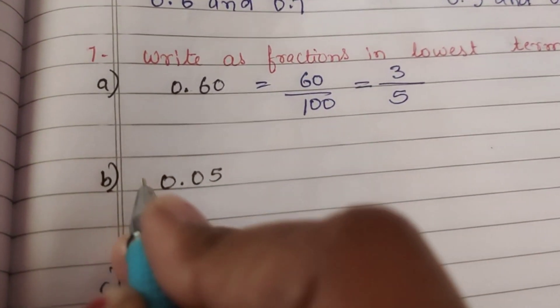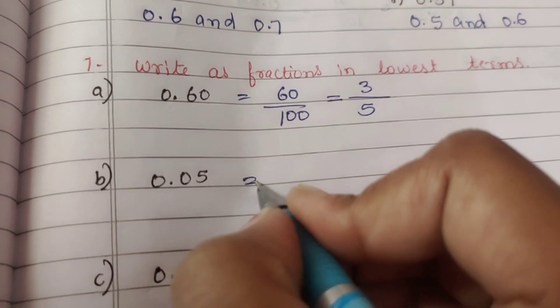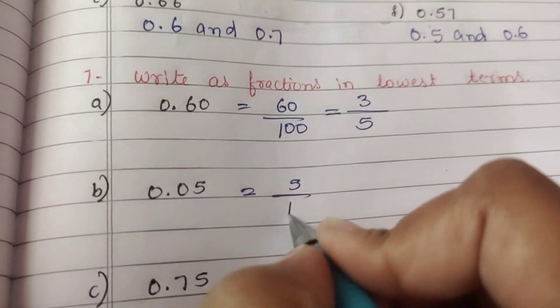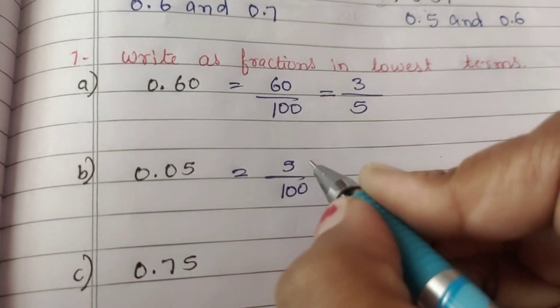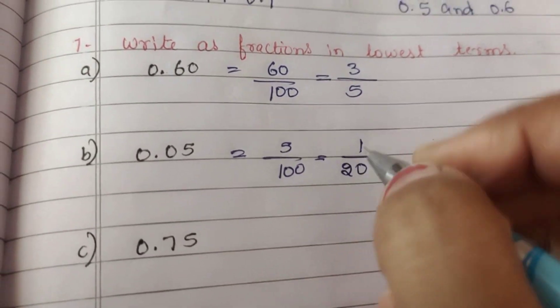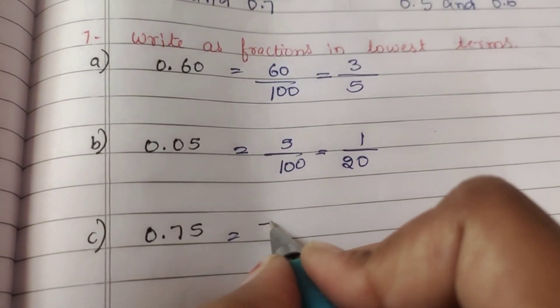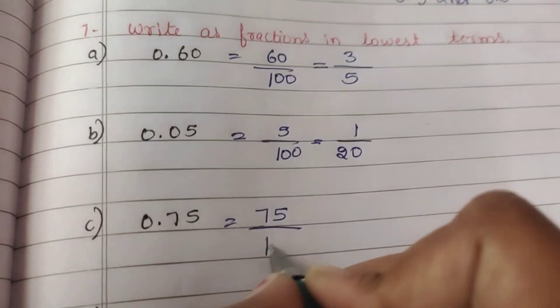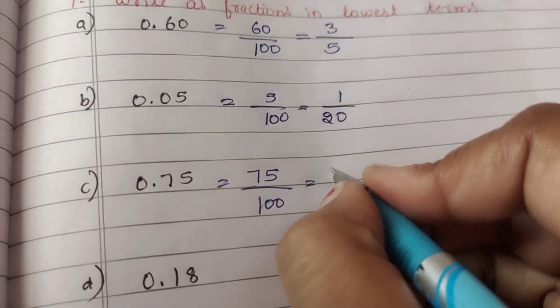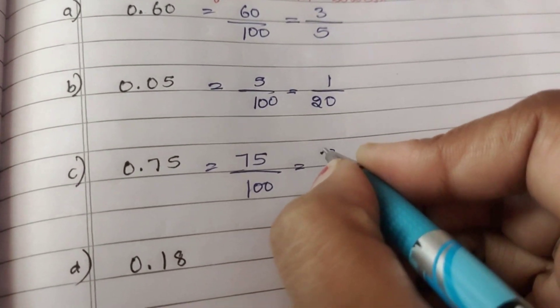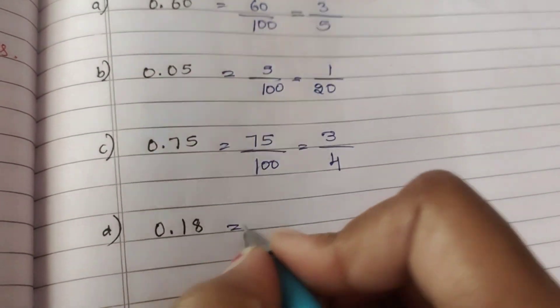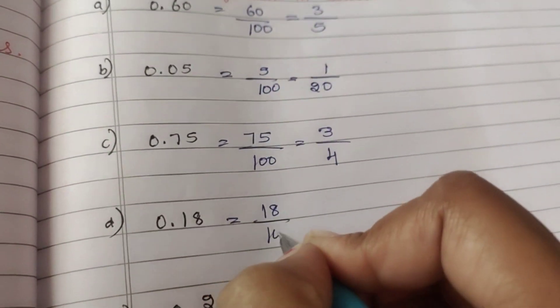Second question: write as fractions in lowest form. 0.05 has 2 digits, so 5 by 100. Lowest form: 5 ones are 5, 5 twos are 10, giving 1 by 20. Next one: 0.75 equals 75 by 100. Dividing by 25: 25 threes are 75, 25 fours are 100, giving 3 by 4. 0.18 equals 18 by 100. Divide by 2: 2 nines are 18, 2 fifties are 100, giving 9 by 50.